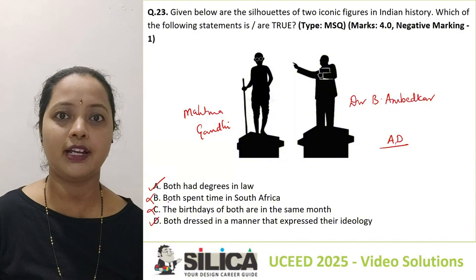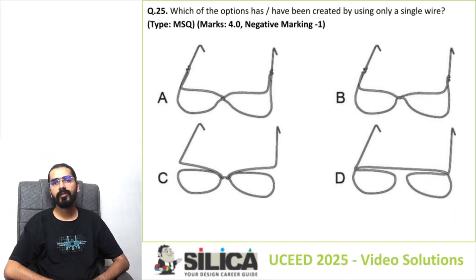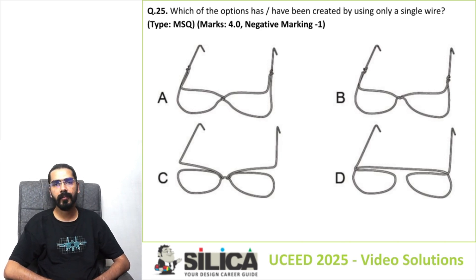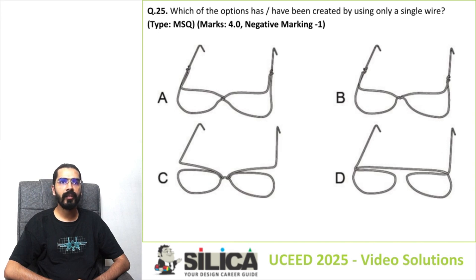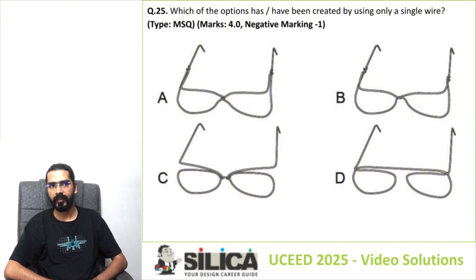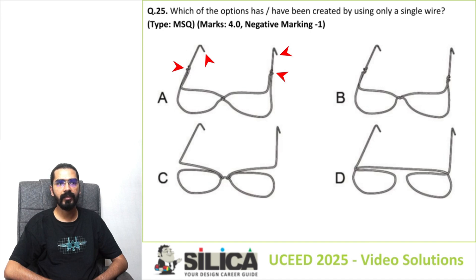Let's solve question number 25 of UC 2025. This is an MSQ question, meaning more than one option might be correct. The question asks which of the options has or have been created using only a single wire. We need two ends for a single wire. In option A, we have two ends here but additional extra ends, so option A is not correct. In option B, we have one end and another, but again extra ends — option B is not correct.